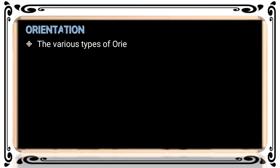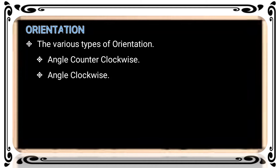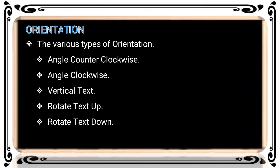The various types of orientations are: first, Angle Counterclockwise; second, Angle Clockwise; third, Vertical Text; fourth, Rotate Text Up; and fifth, Rotate Text Down. The last one is Format Cell Alignment. There are six combinations of orientation types in total.